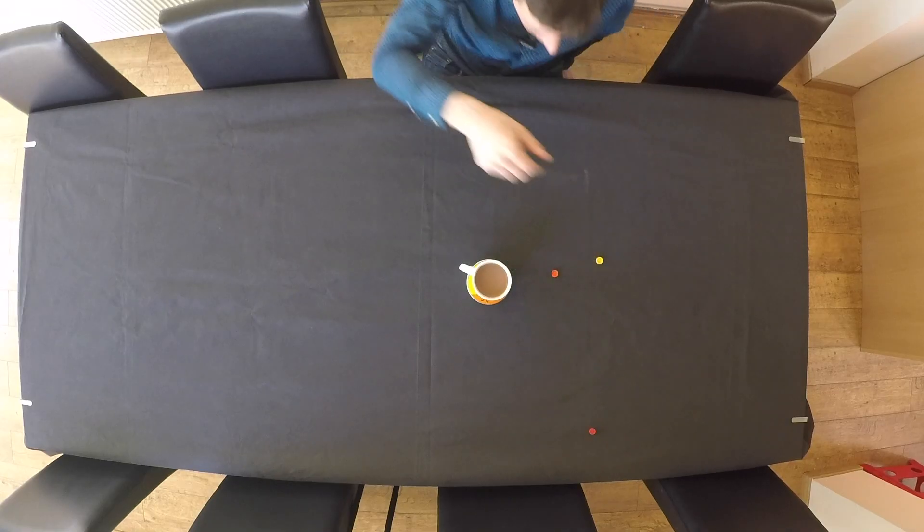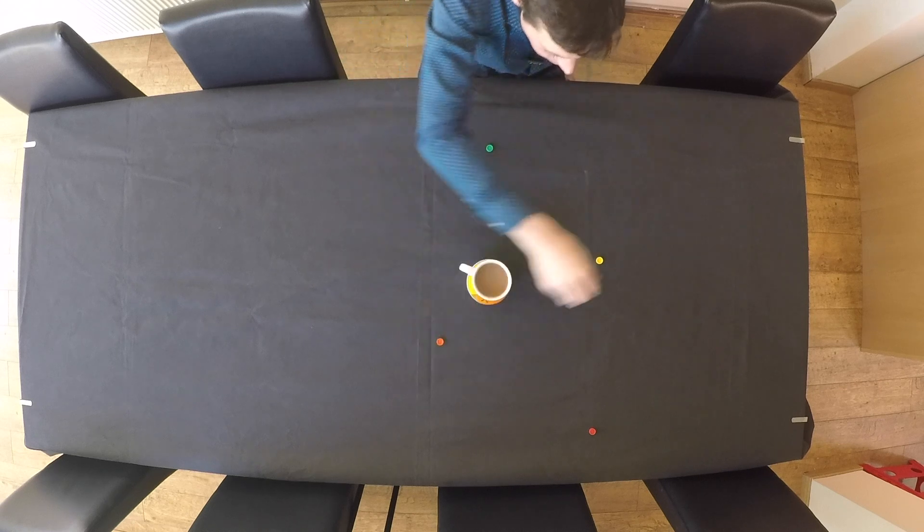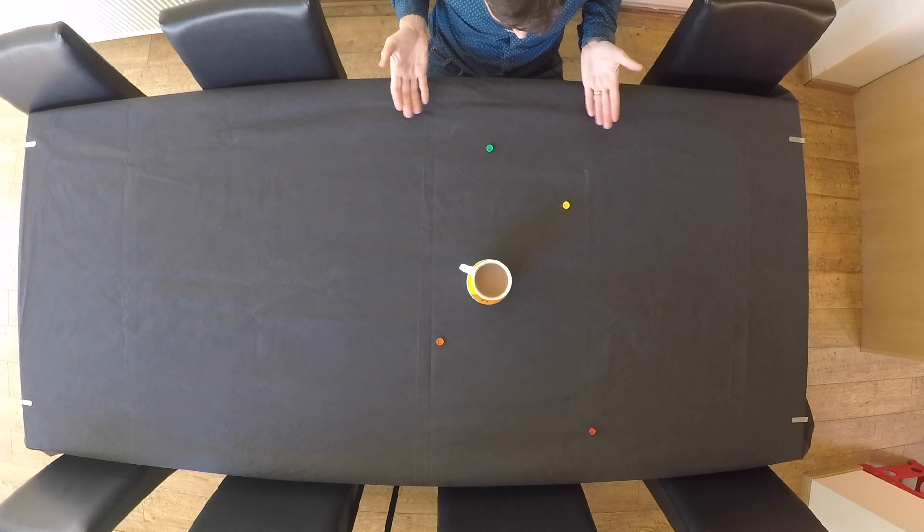And after three years, Mars would have done half a lap again. Mercury will be over here and Venus will just be about there. So now you can see this time Venus is the closest. So the answer to which is the closest planet to Earth is, well, it depends. It could be Venus, Mercury or Mars.